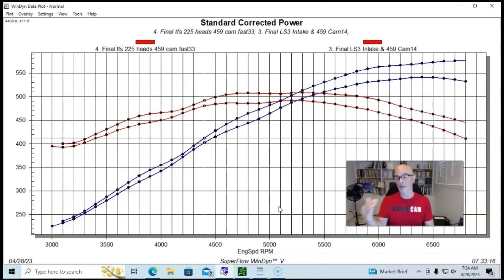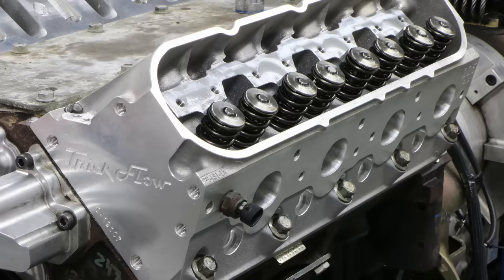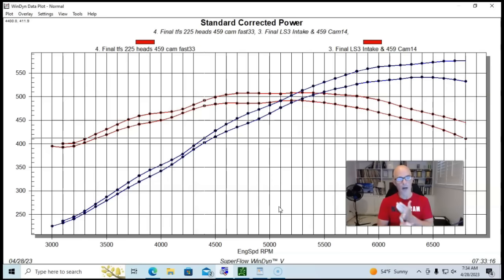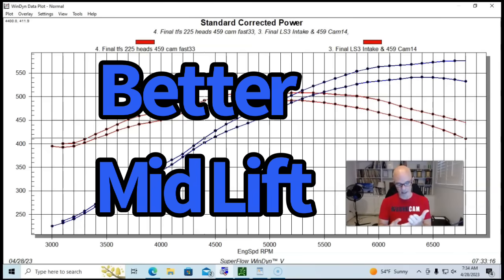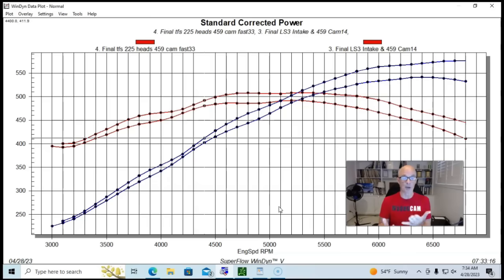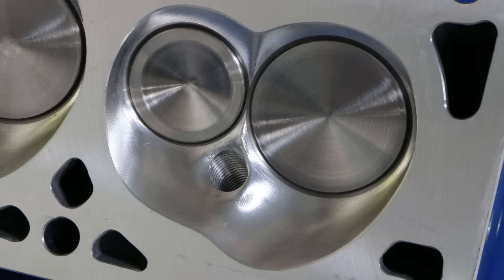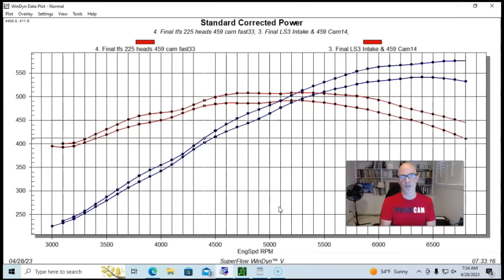The factory rec port head and the Trick Flow head, the peak flow difference is not very dramatic between those two. That's not why one made more power than the other. The reason that a Trick Flow 225 cathedral port CNC head made more power than the factory rec port is a lot of things. One, the fact that it has much more average flow. It has a lot more mid-lift flow than the factory rec port heads. It has a better coefficient of discharge. It has as much or more flow and it's doing it through a smaller valve package. It has a smaller combustion chamber. It has smaller port volume. It's basically just a more efficient head.